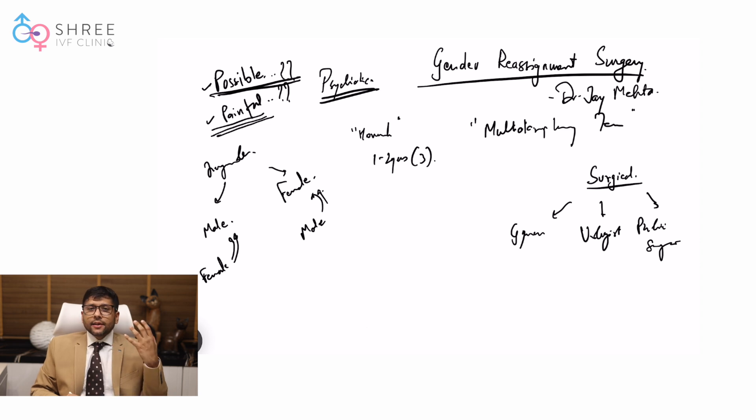So if you look at the typical surgeries which are going to be involved in a transgender male, that means when somebody wants to get converted from female to male, it's going to involve something called a bilateral mastectomy, that means excision of both the breasts. Now that is not a very painful procedure. It's also going to involve something called hysterectomy, that means removal of the uterus. That is not a very painful procedure. It is done with laparoscopic surgery.